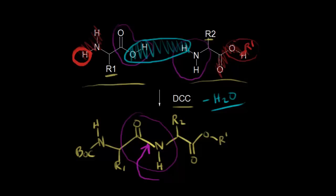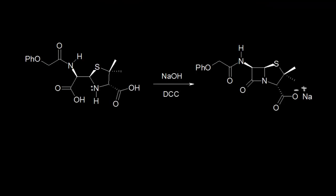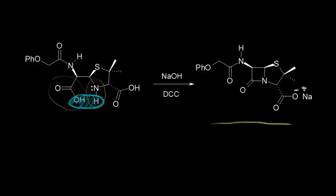When he used DCC as a coupling agent to form peptides in his lab, he thought he could also use it to form penicillin. Over here is penicillin — this is actually from Dr. Sheehan's total synthesis of penicillin. We can see an amine and a carboxylic acid, and using lasso chemistry — taking this OH and this H and losing water — we can see we have an amide in a ring. An amide in a ring is called a lactam, and this is a beta-lactam.